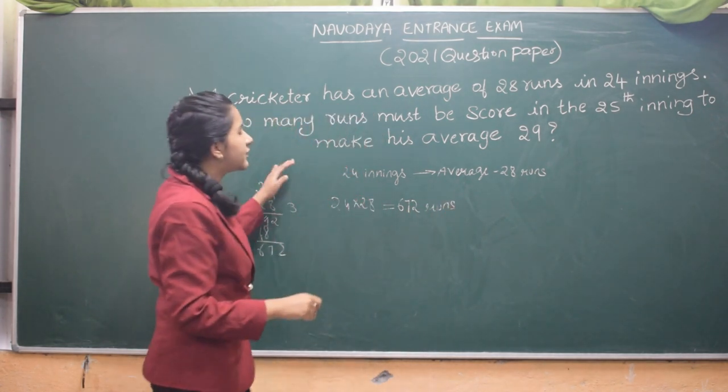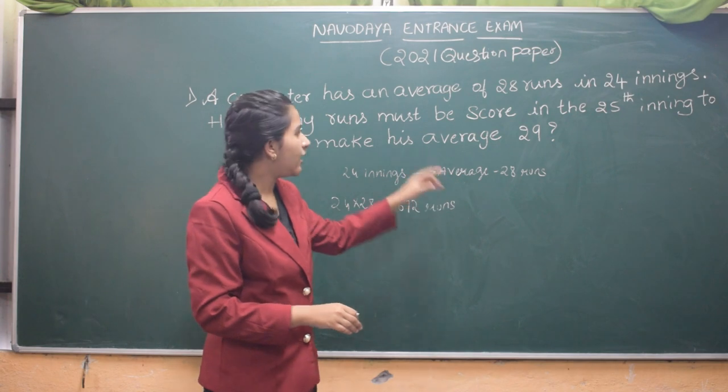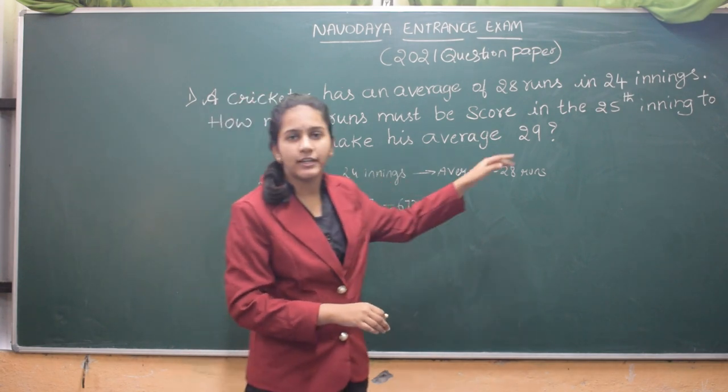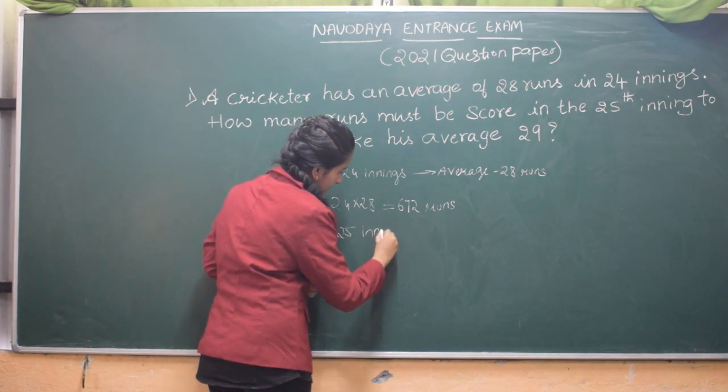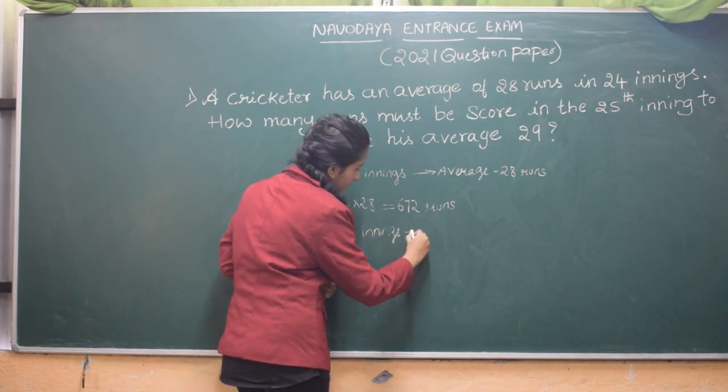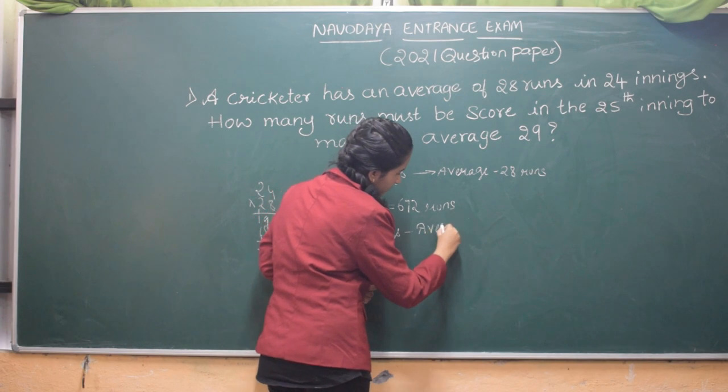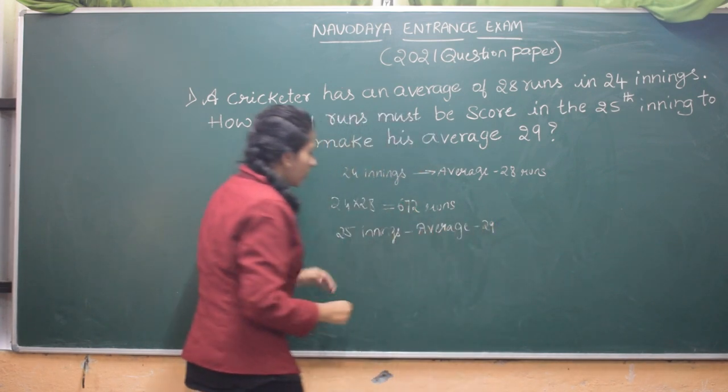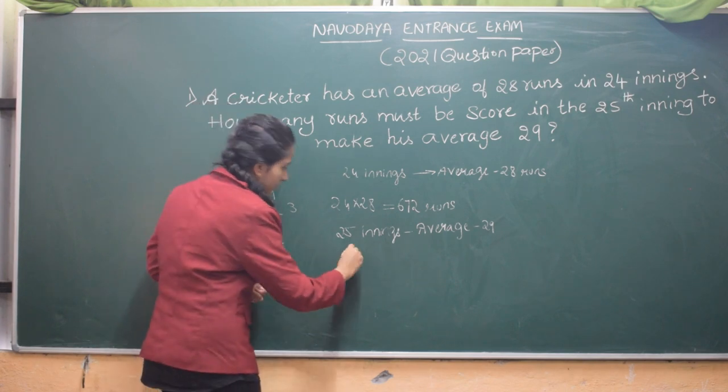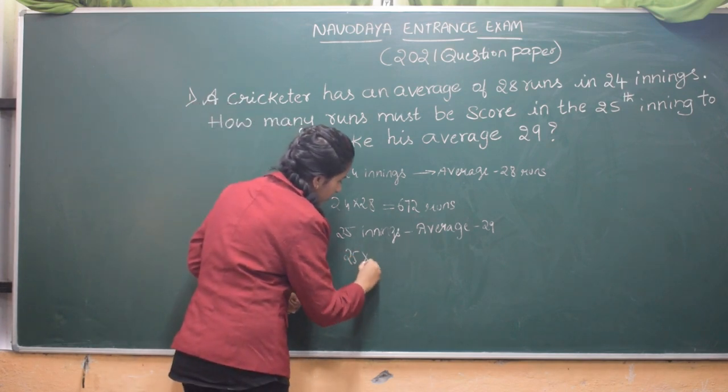Now the cricketer is going to the 25th inning and he should make an average of 29 runs. So for 25th inning, average should be 29. So now here again we will find the total number of runs: 25 innings is 25 into 29.